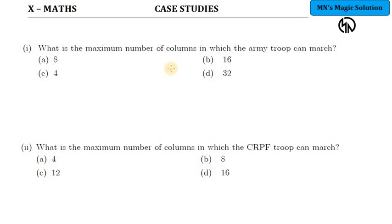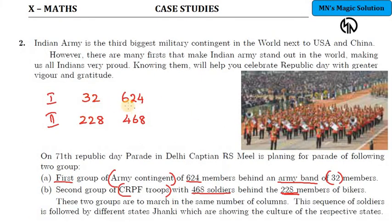We should have to take the HCF of the number of people in the first group. Correct? Exactly. We have 32 and 624. So 32 and 624, find the HCF, that will give you the maximum number of columns in which these people can march.